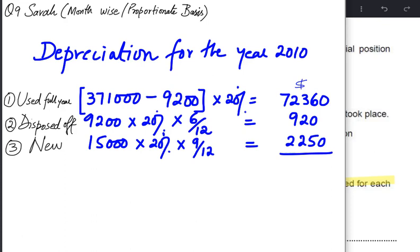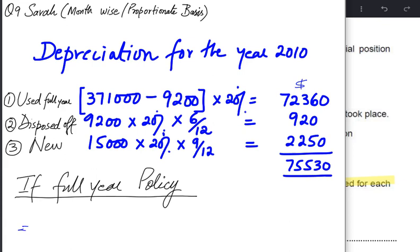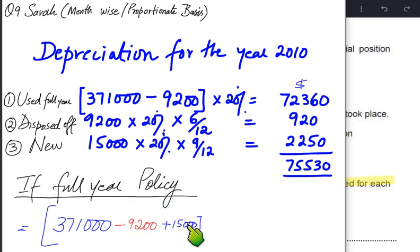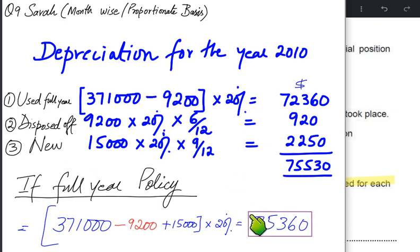Adding up all three steps gives the total depreciation for the year. For comparison, under a full year policy we would start with total cost of 371, deduct the asset sold, add the asset bought, and simply apply 20% directly to that closing balance. That is the difference between month-wise and full-year depreciation policy.